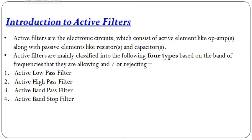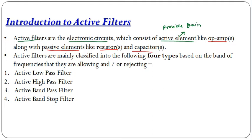With that, all passive filters are completed. Now we will see the introduction to active filters. Active filters are similar to passive filters but use active components like op-amp, transistor, and FET. Because of these active elements they provide gain, which can be varied by adjusting the values of RF and R1. Active filters use active elements like op-amp along with passive elements like resistors and capacitors. Active filters are of four types: active low pass, active high pass, active band pass, and active band stop filter.